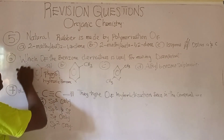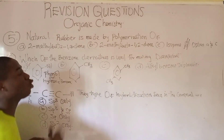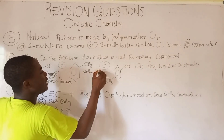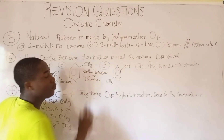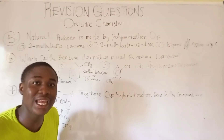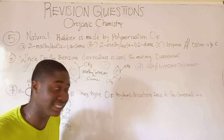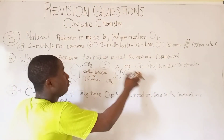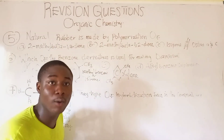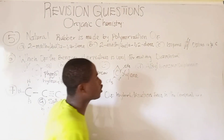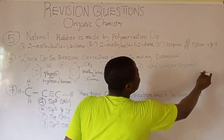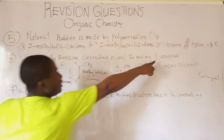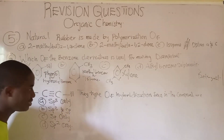Option A (phenol/hydroxybenzene) is the answer. Option B is toluene (methylbenzene), which is used for making explosives like trinitrotoluene (TNT). Option C is xylene or dimethylbenzene, with two methyl groups. Option D is alkylbenzene sulfonate, used for making detergent. The benzene derivative for disinfectant is phenol.